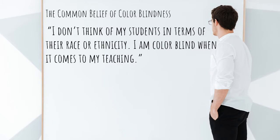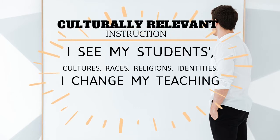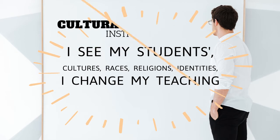Oftentimes in teaching, teachers say, 'I don't think of my students in terms of their race or ethnicity. I'm colorblind when it comes to my teaching.' Culturally relevant instruction rejects the idea of colorblindness and instead says, 'I see my students, I see their race, I see their culture, I see their identities, and my teaching and instruction changes because of it.'